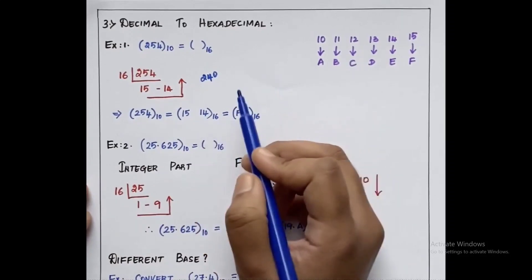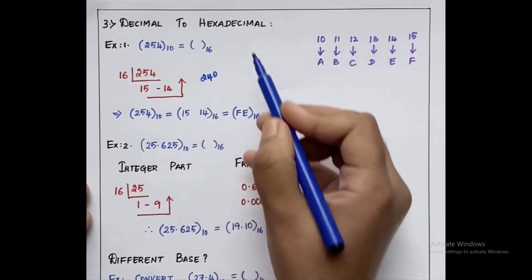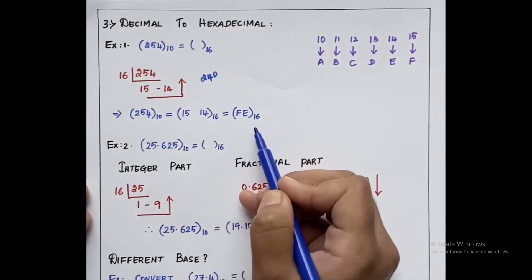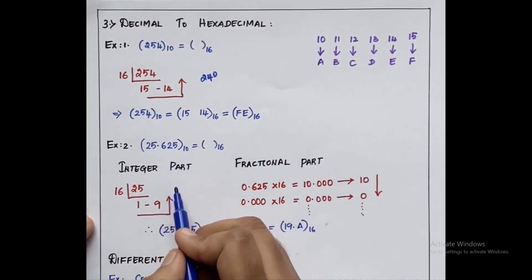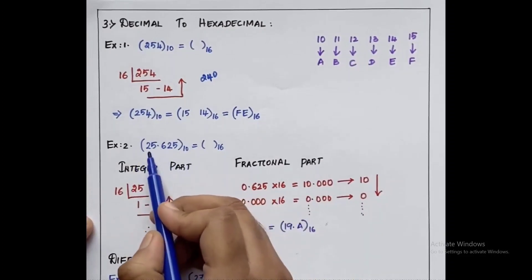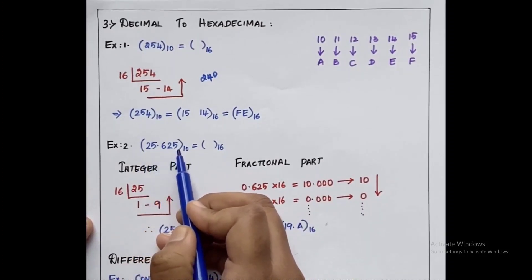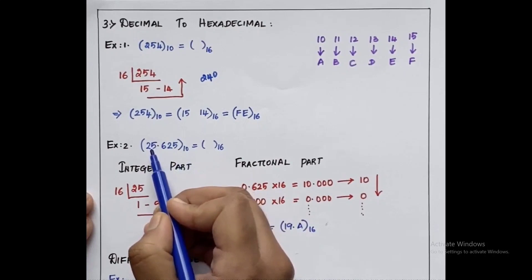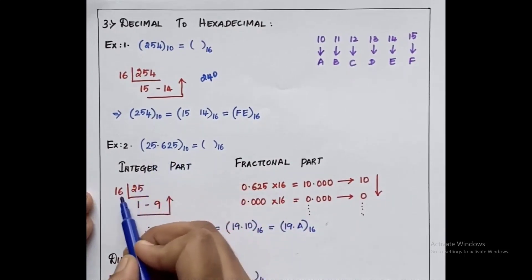So we get the equivalent hexadecimal value for 254 as FE to the base 16. This is how we replace the given decimal number into its equivalent hexadecimal number. Next we will see a second example where it has both an integer part and a fractional part: 25.625.